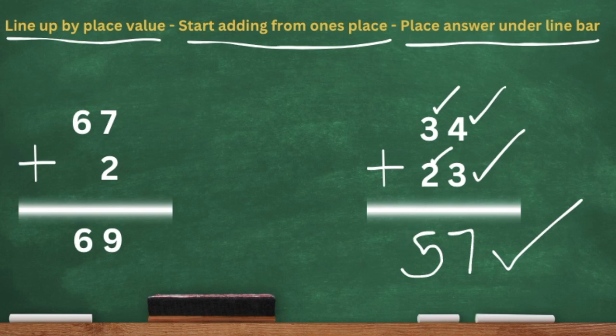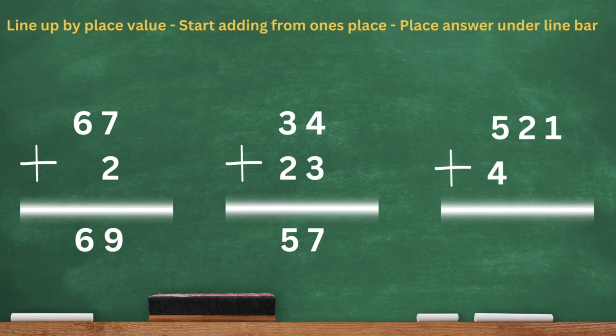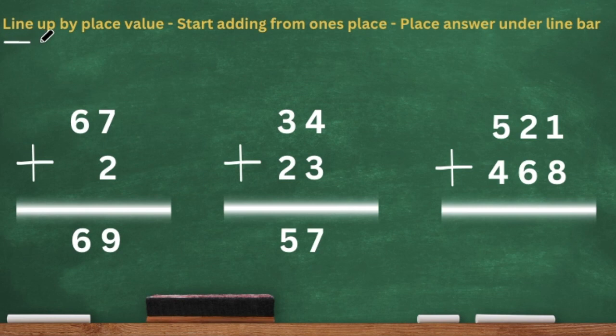I know, I know, I know you guys are having such a fun time. Let's do another one. We have 521 plus 468. Take a look at the top of the board. We have our criteria for success: line up by place value, start adding from the ones place, and place the answer under the line bar.